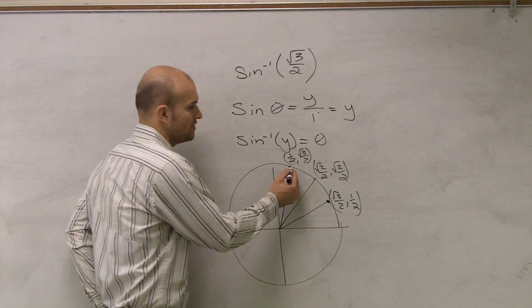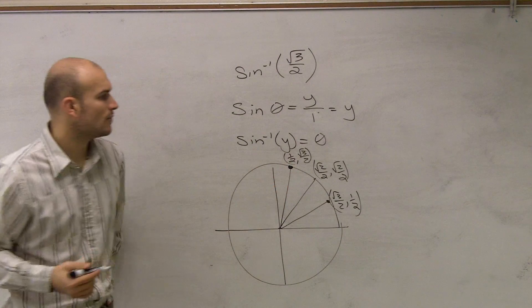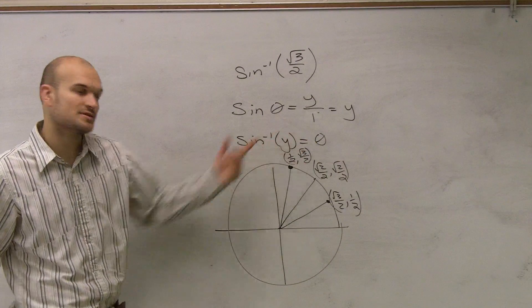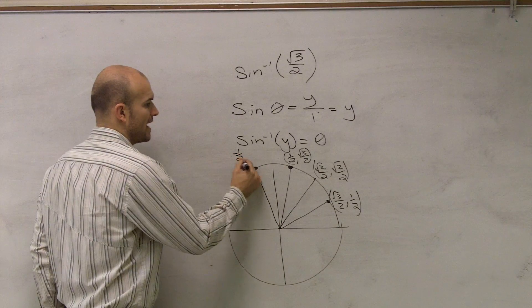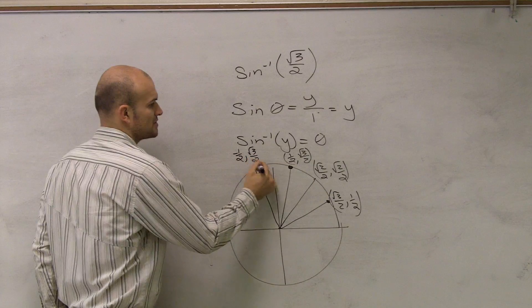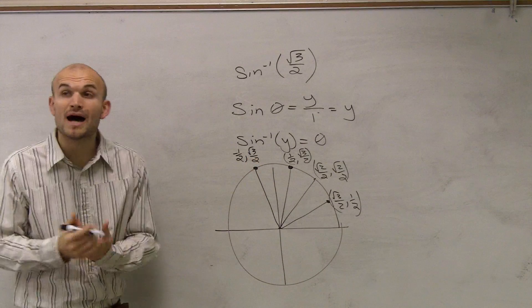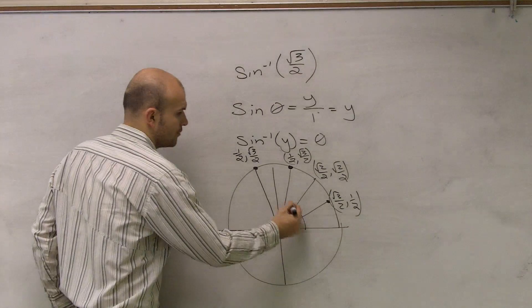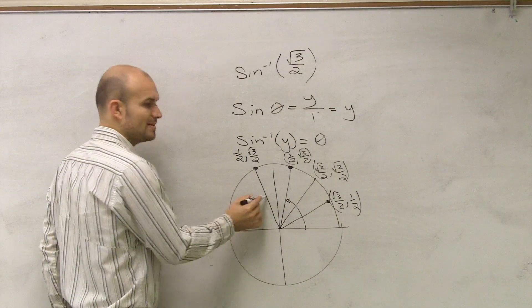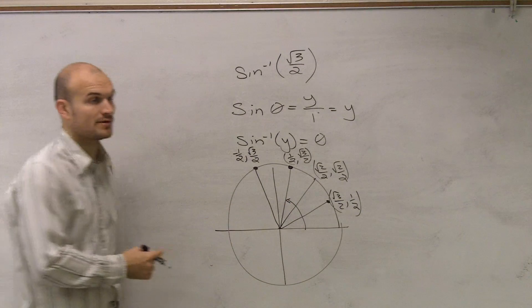Now, is this the only time when my y coordinate is going to be radical 3 over 2? No. There's actually this point over here, right, which is negative 1 half, radical 3 over 2. So I actually have two possible angles that I could use. It could be this angle, which is pi thirds, or it could be this one, which is going to be 2 pi over 3.